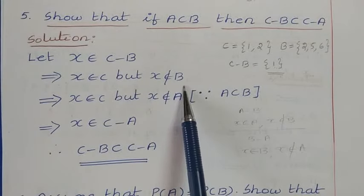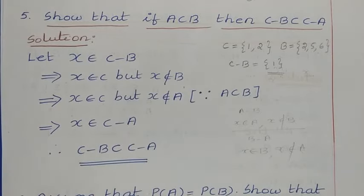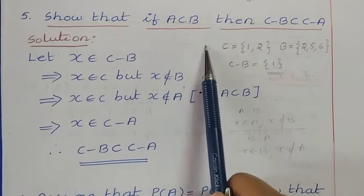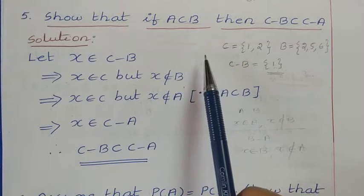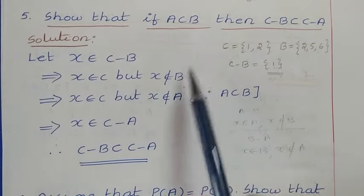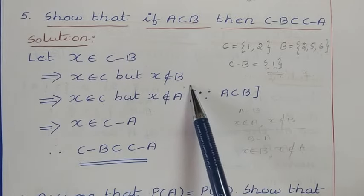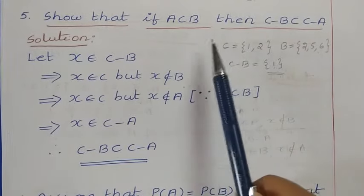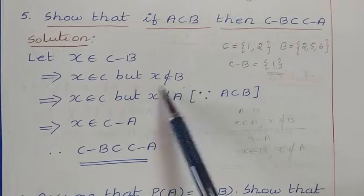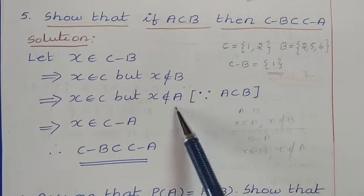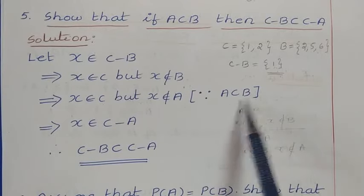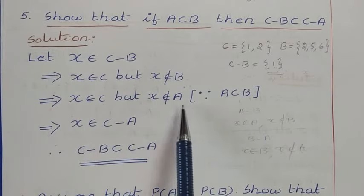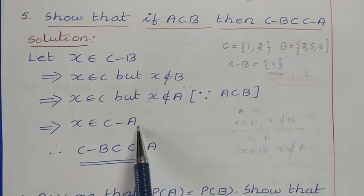From X belongs to C and X does not belong to B, we can also say that X does not belong to A. Why? Because in the question it is given that A is a subset of B, meaning every element of A must be in B. So if an element does not belong to B, it cannot be in A either. Therefore X does not belong to A. So X belongs to C but X does not belong to A, which is nothing but C minus A.